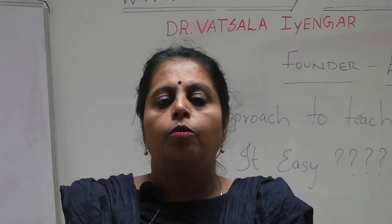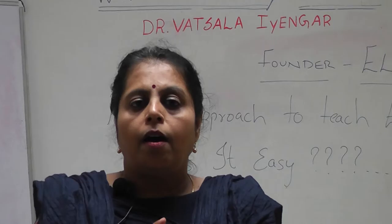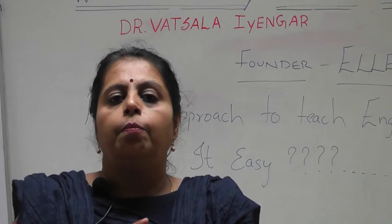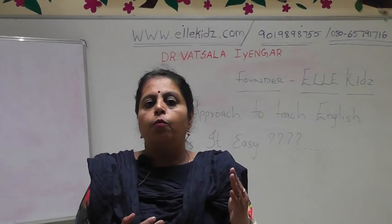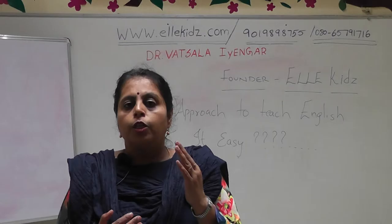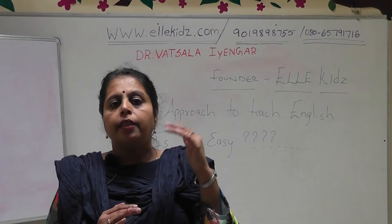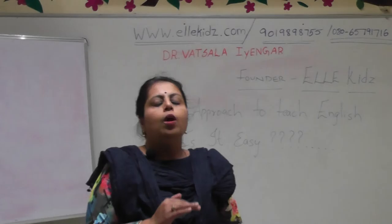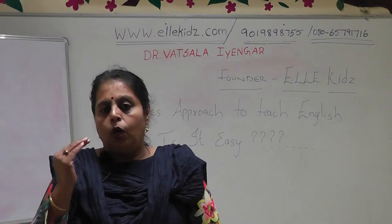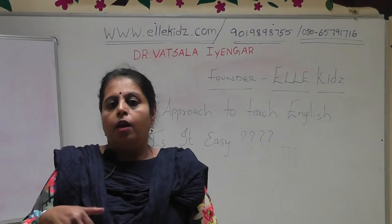Now let us look at the letter I. I is again a vowel and it has two sounds — the short sound and the long sound. The short sound occurs in words such as igloo, where I makes the sound /ɪ/. The child can correlate the letter I with igloo and insect. As mentioned in a previous video, I has a quick sound because it is a bubble, and bubbles tend to have a quick sound.